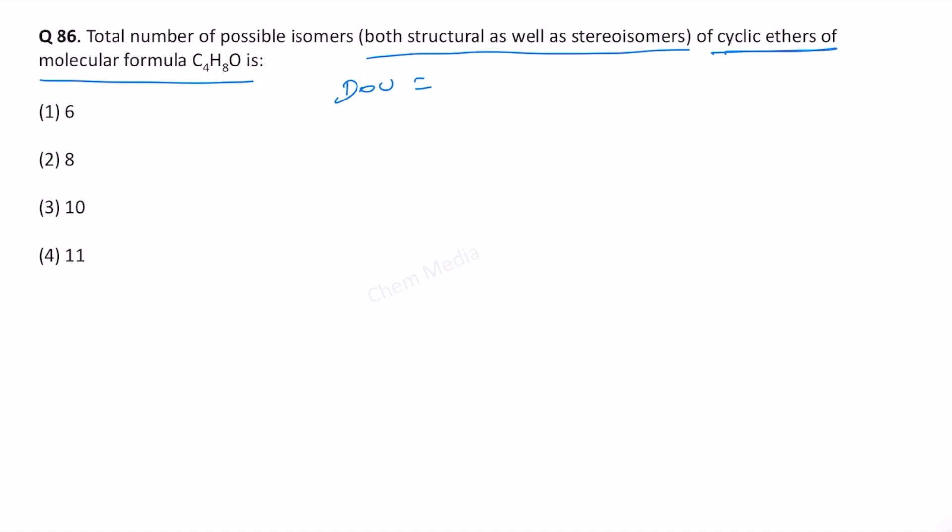For this elemental composition, the degree of unsaturation will be 1 because it is 1 plus number of carbon atoms that is 4 minus number of hydrogen atoms that is 8 by 2. Therefore, this is 5 minus 4 and that is equal to 1.